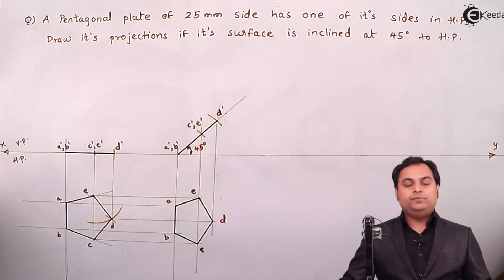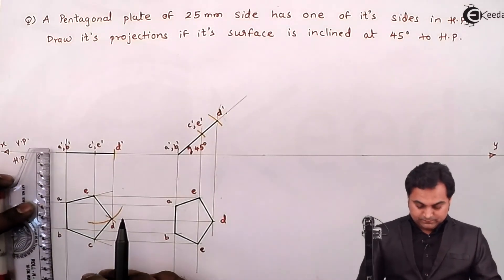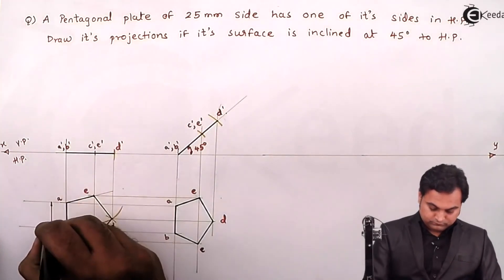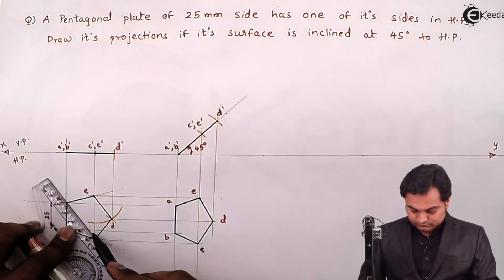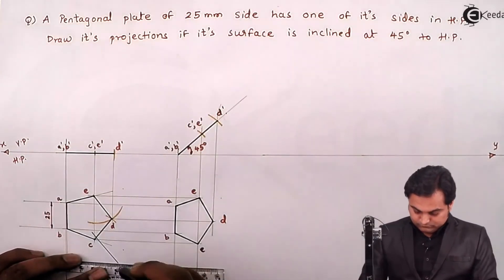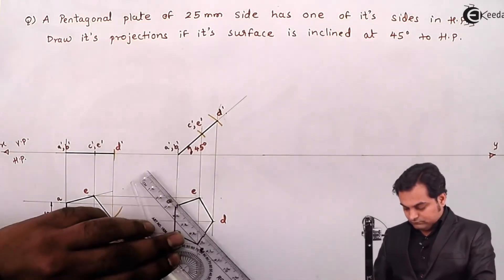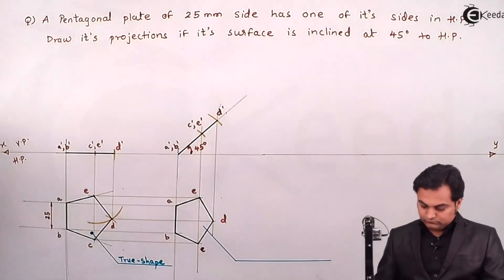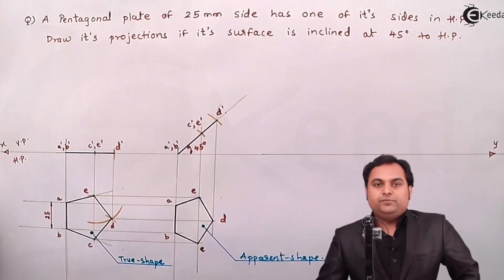And remember, dimension should be medium dark so I'm using red color for the dimensions. So with this we complete the problem.